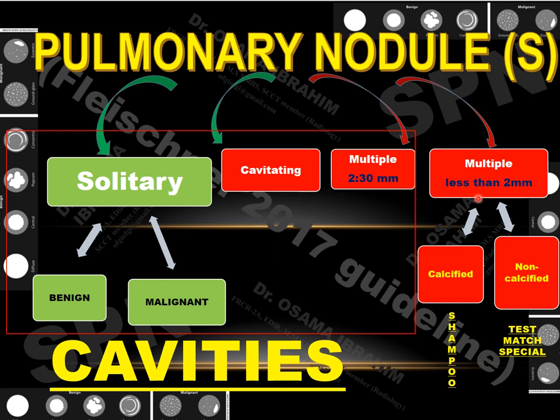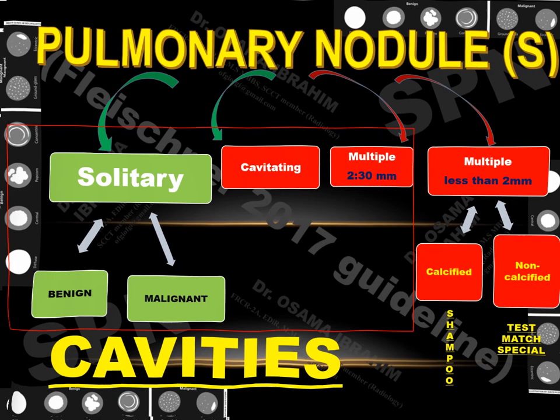The mnemonic CAVITIES can help remember the causes of solitary cavitating or multiple pulmonary nodules greater than 2 mm, as discussed in a previous presentation.